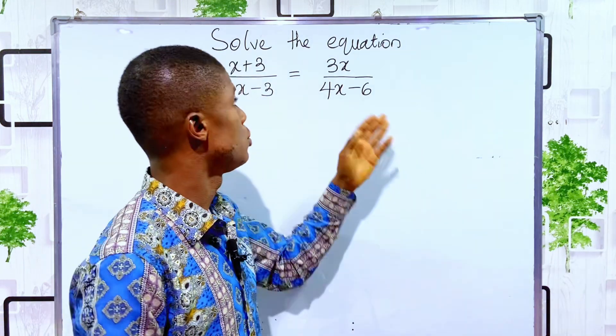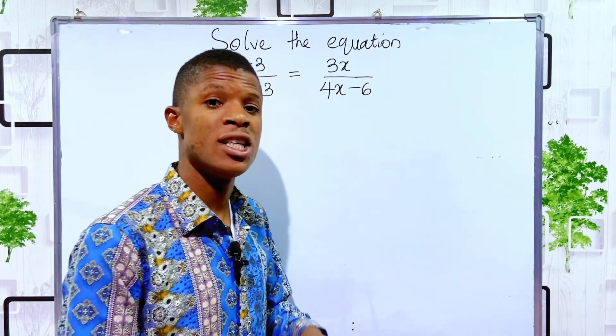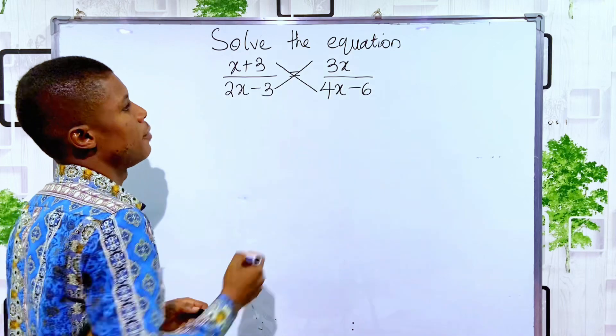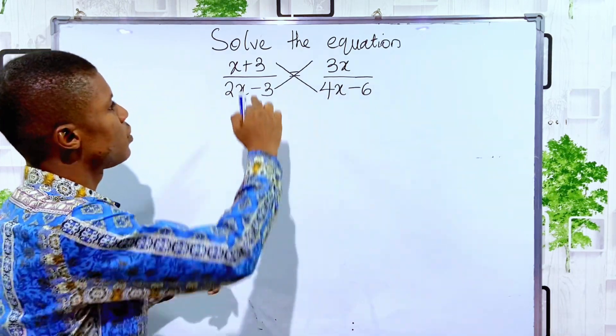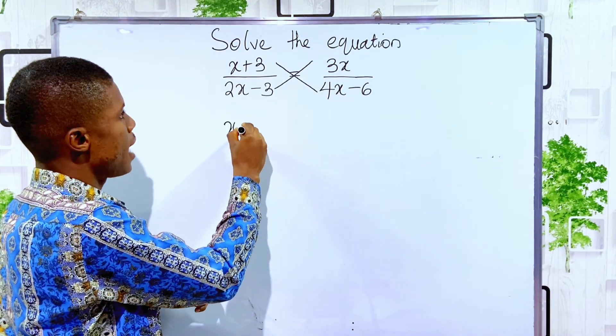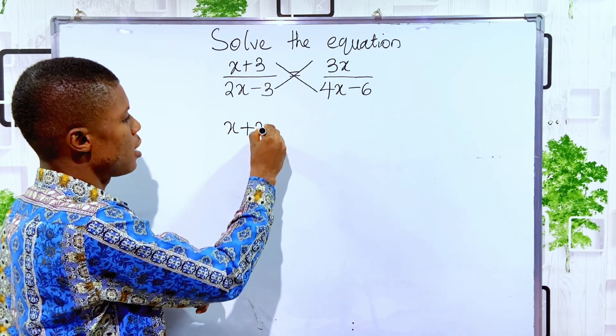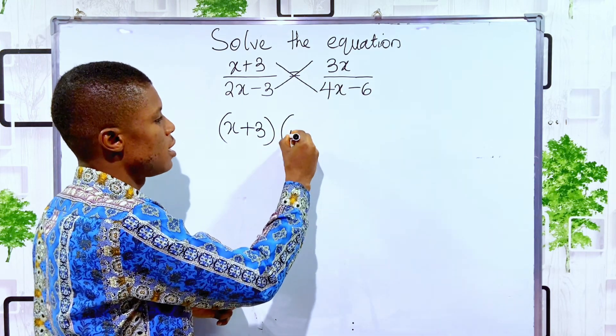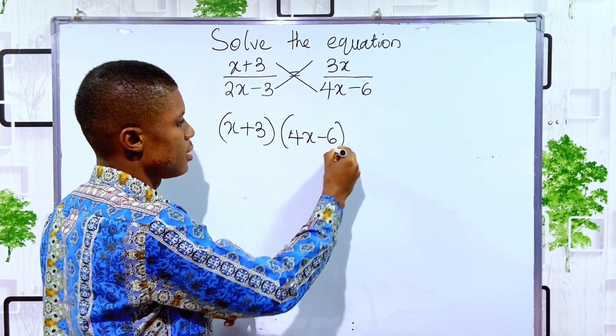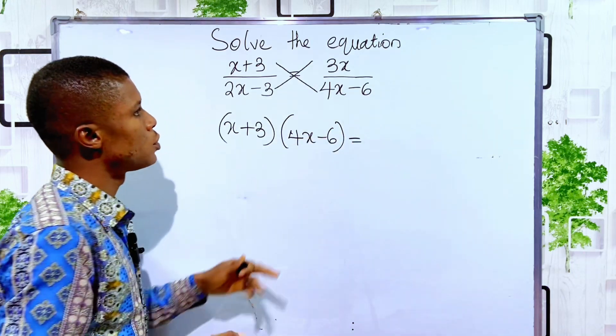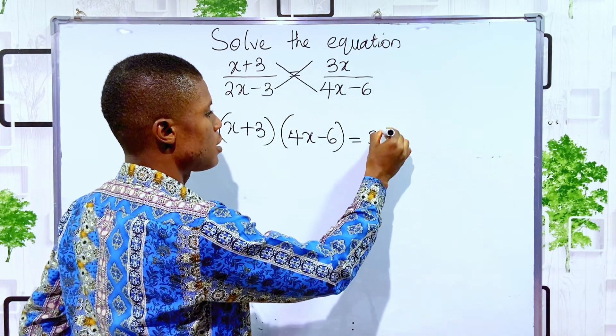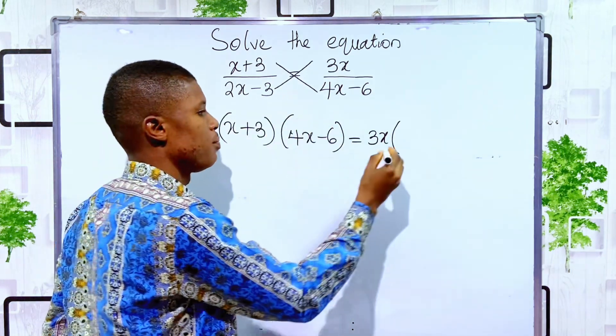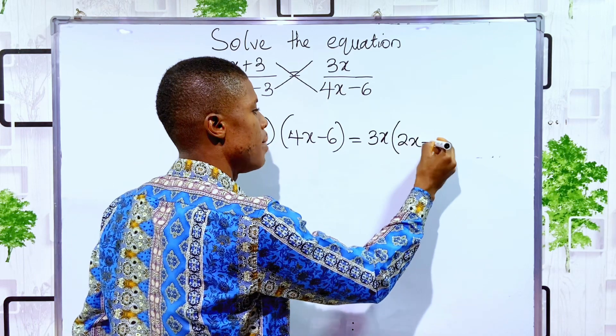So the first thing we are going to do in this type of equation is just to cross and multiply. When we cross and multiply, this top number, x plus 3, will multiply the bottom number, which is 4x minus 6. And it is equal to 3x will now multiply 2x minus 3.